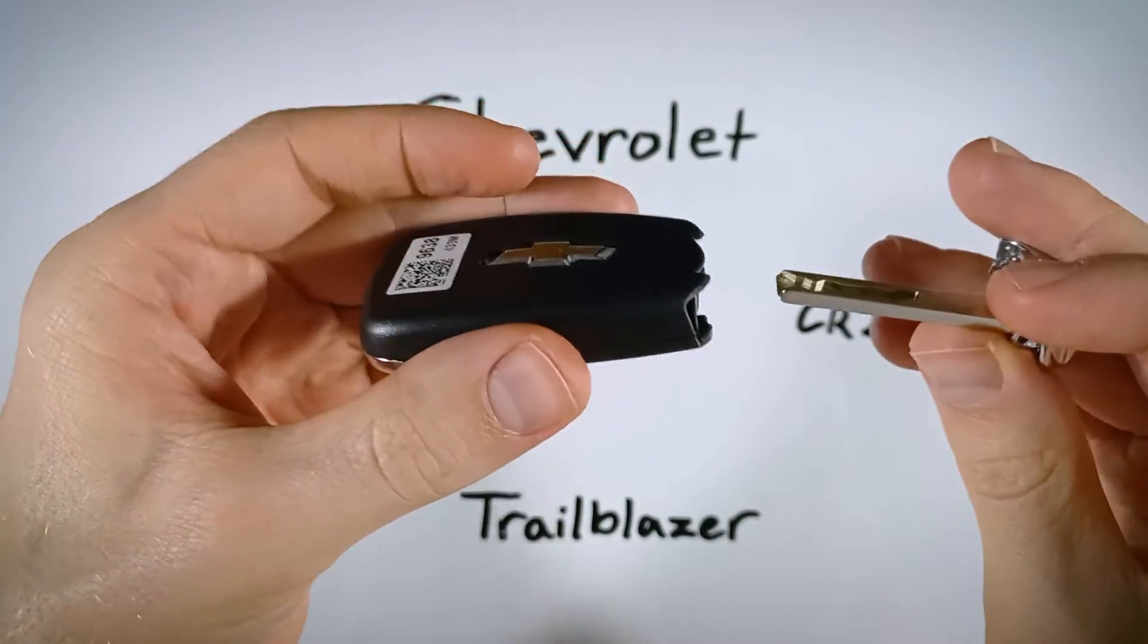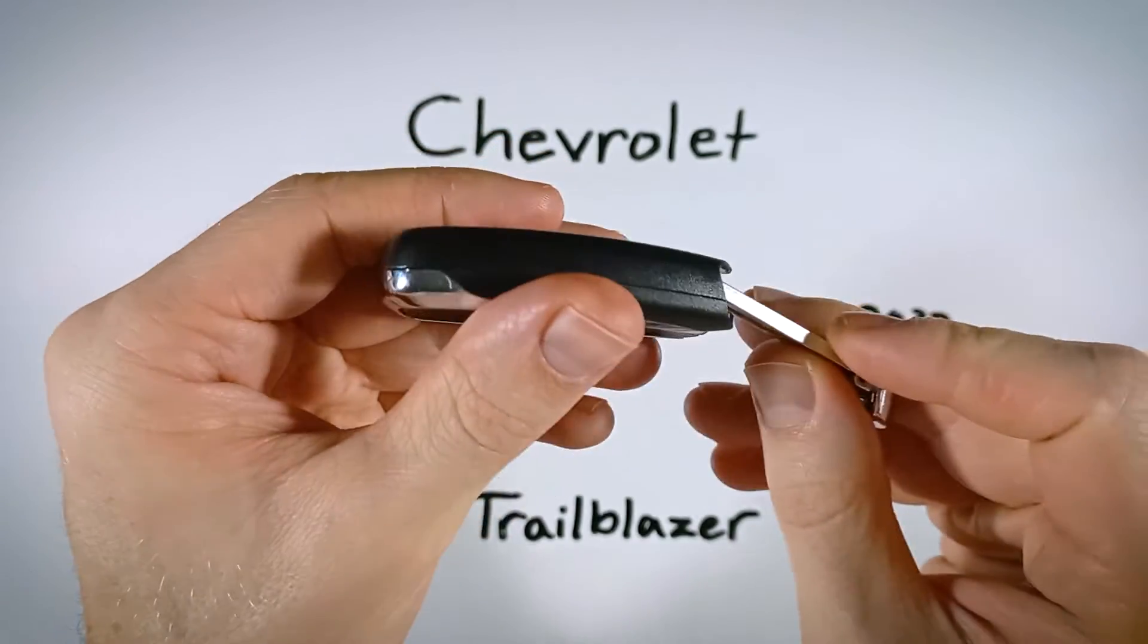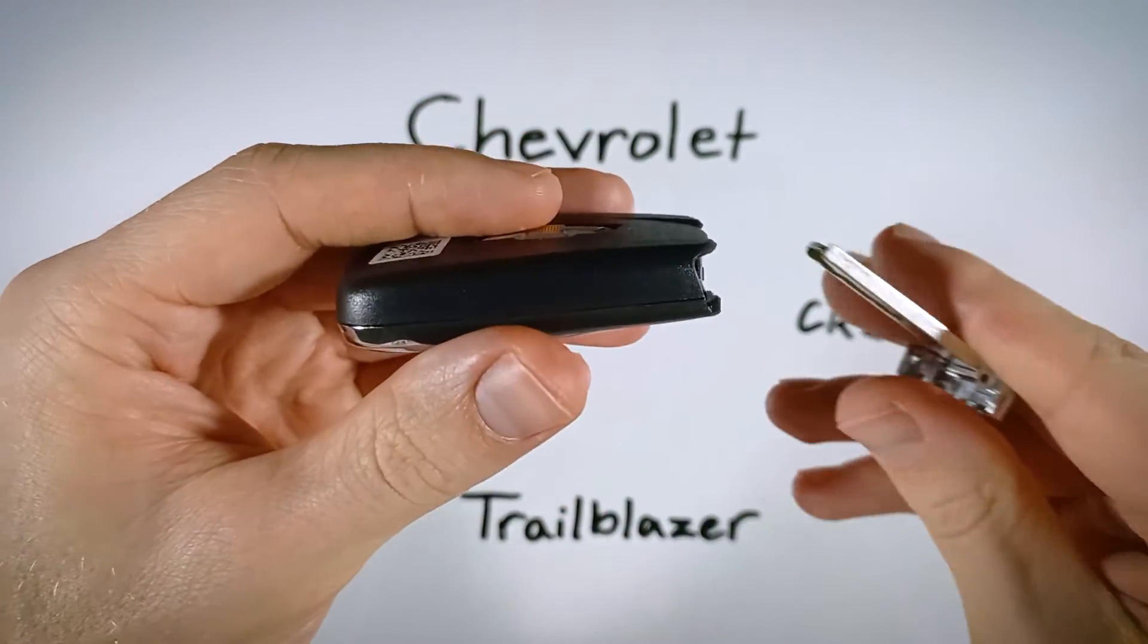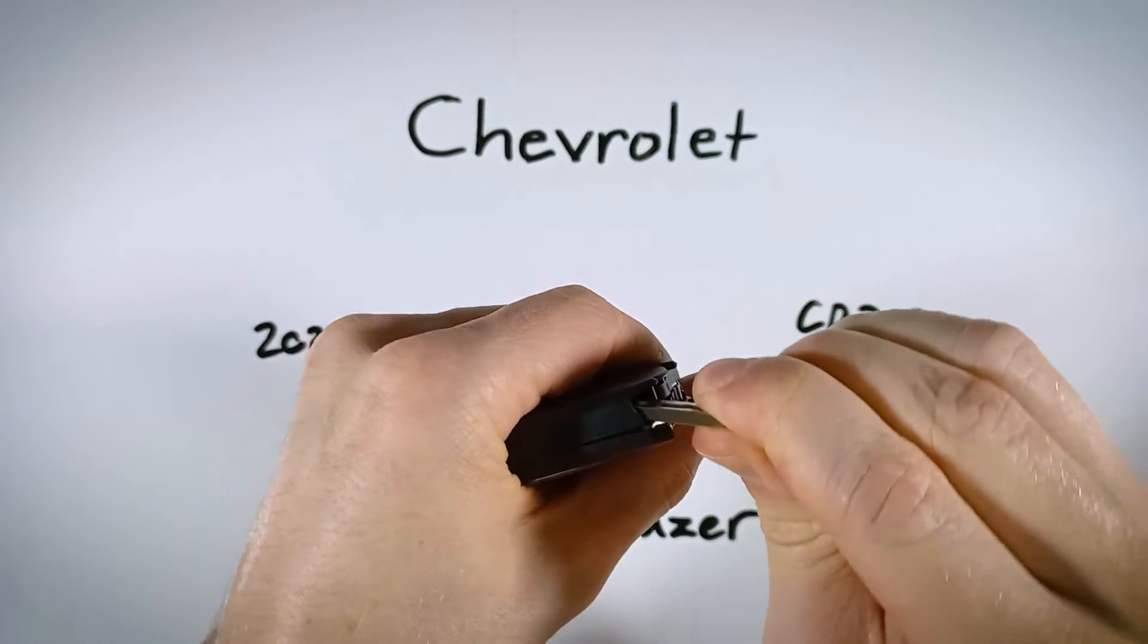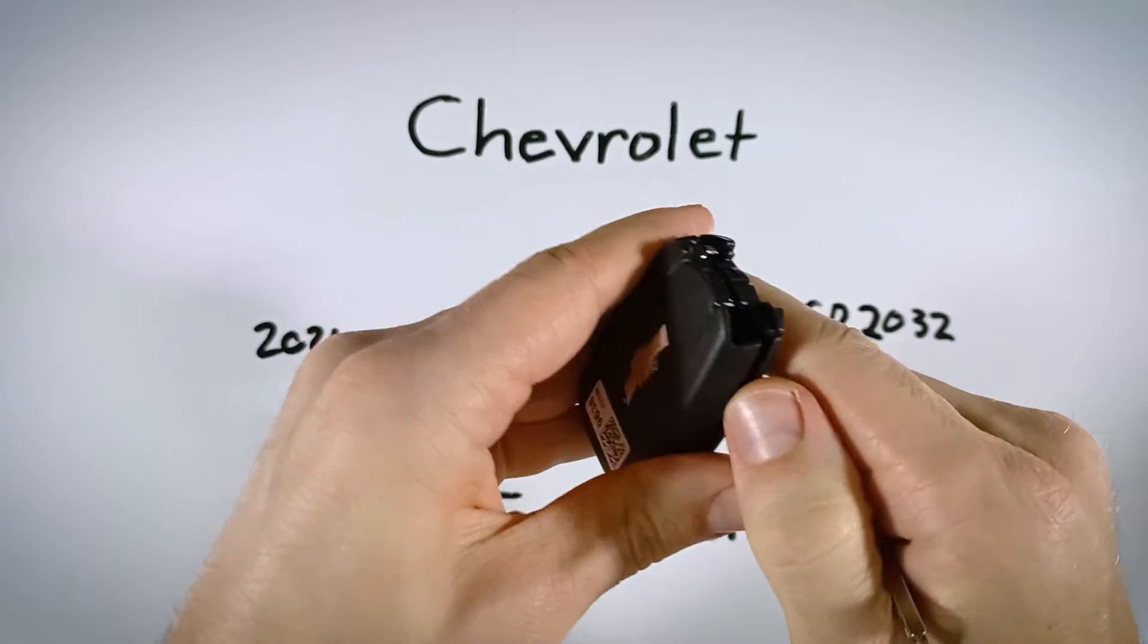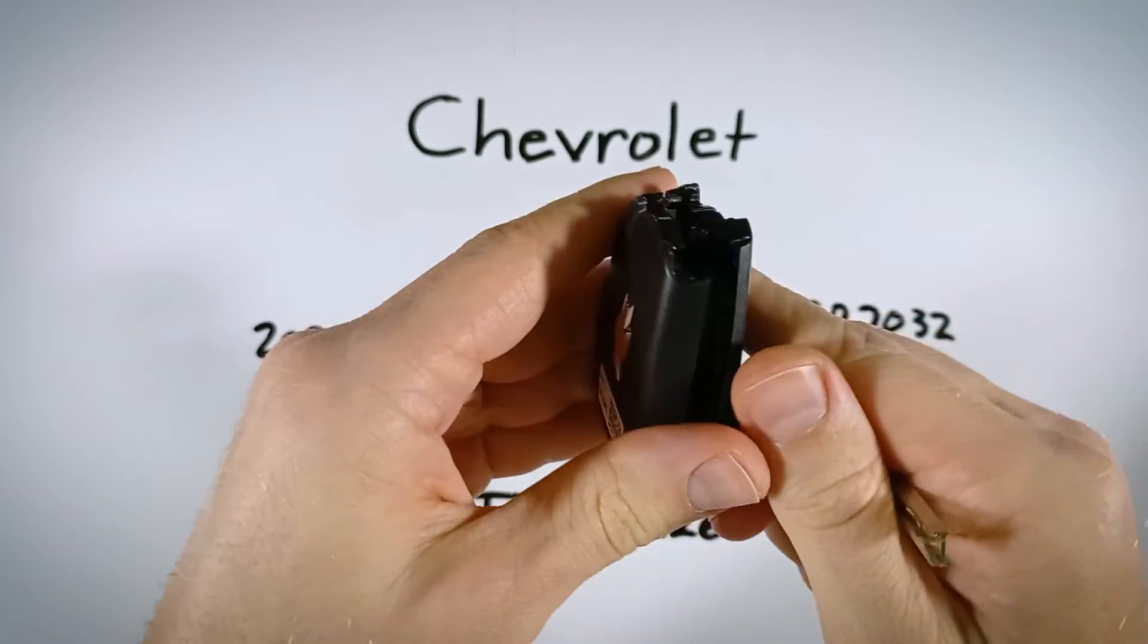Now we're going to use this key to pry off the back section of plastic here. Let me show you quickly how it's done, and then I'll give you the details that you need to know. So there we go. Just like that. Pops right open for you, and we have access to the battery.